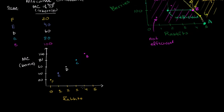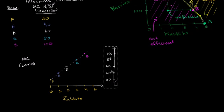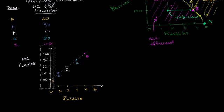So what I've just done is plotted the marginal cost. These are points on our marginal cost curve — marginal cost as a function of the number of rabbits we have. Let me connect all the dots. In this scenario it happens to be a line, which doesn't always have to be the case, but in many introductory economics courses it's often a line for simplicity. This is our marginal cost as a function of the number of rabbits we have.